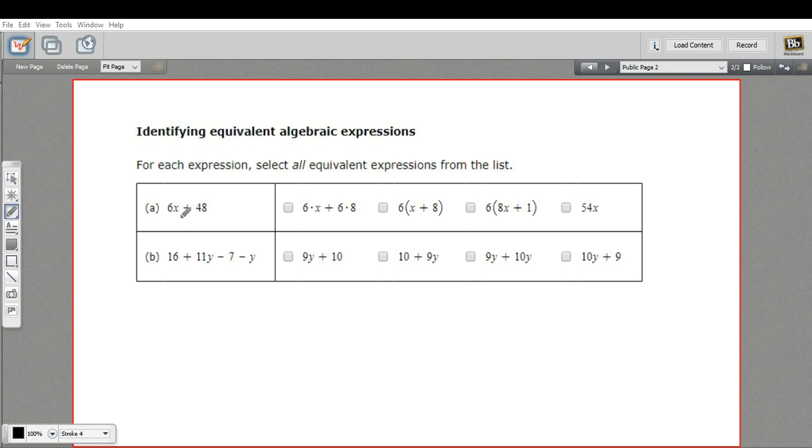Well, in this first one, we have 6x plus 48. And when we write 6 and an x right next to it, it means 6 times x. That's multiplication there.